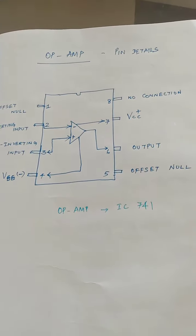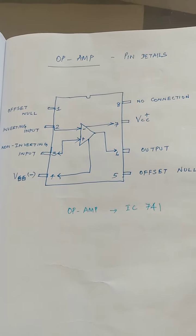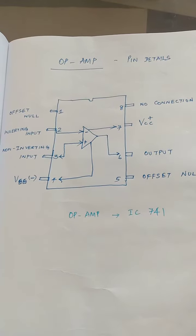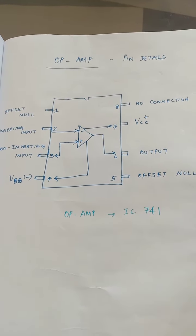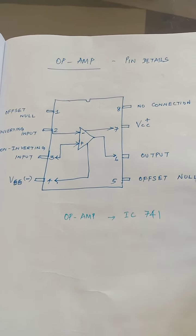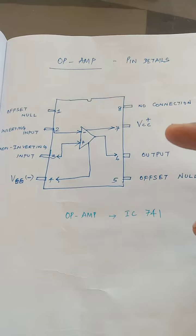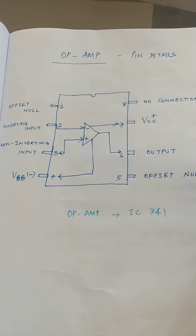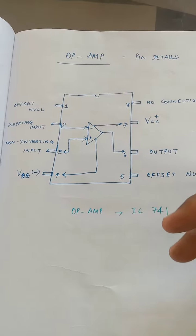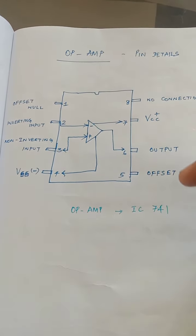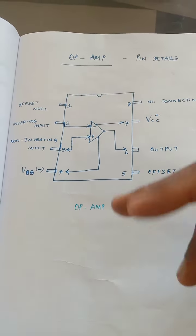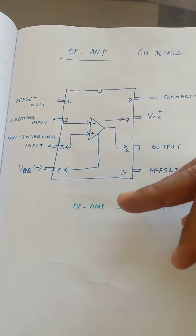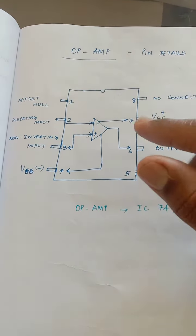This is the 741 IC. What is the offset null? If you look at pin number 2 and pin number 3, there can be a circulating current which develops a voltage. That is why we use a voltage at the offset null pins to nullify that voltage.